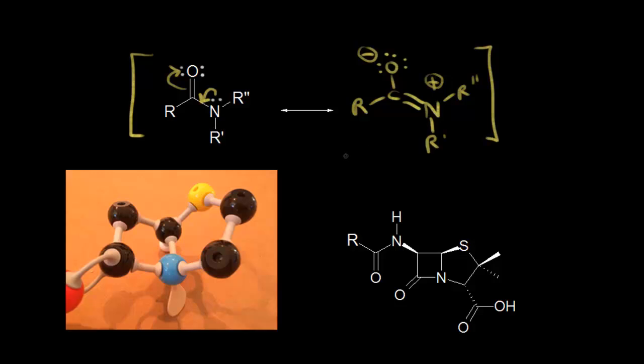If we look at the resonance structure on the right and think about the hybridization state of nitrogen in this resonance structure, it's obviously sp2 hybridized here, indicating that the nitrogen is planar. In an ideal amide, the planar nitrogen gives the best overlap of orbitals. That allows this lone pair of electrons to be delocalized, which increases the electron density around our carbonyl carbon. That makes our carbonyl carbon less electrophilic and therefore less reactive. This is why amides are generally unreactive. That's an ideal amide.